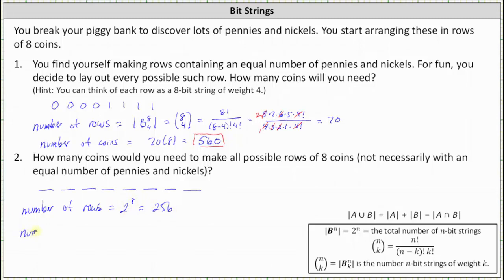And therefore, the number of coins that you would need to form all of these rows would be 256 times eight, since each row has eight coins. And 256 times eight is equal to 2048. And this does answer the question, you need 2048 coins to form all the possible rows. I hope you found this helpful.